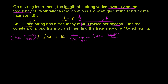Multiplying the left-hand side by 400 cycles per second, the left-hand side becomes 400 times 11. Well, 4 times 11 is 44, so 400 times 11 is 4,400. And then our units are cycles times inches per second — cycles times inches in the numerator, divided by seconds.